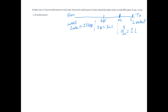It looks like we need three conversion factors. So this is a more complicated problem, but it's a multi-step dimensional analysis problem, just like the ones we did before, except we have three conversion factors. We start out with the number we want to convert, which is 800 cakes. Cakes is on the top, which means in order for it to cancel out, it must go on the bottom of our first conversion factor. We find that conversion factor — one cake goes on the bottom, and one and a half teaspoons goes on the top.